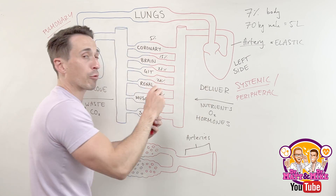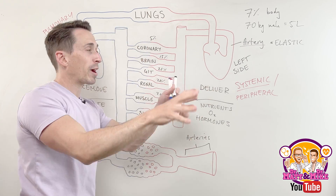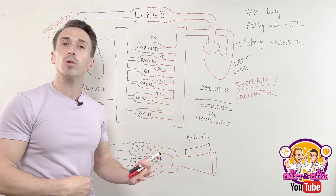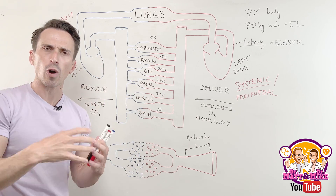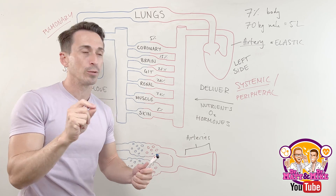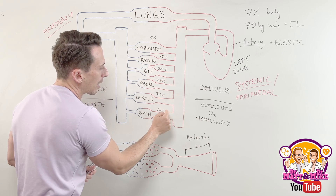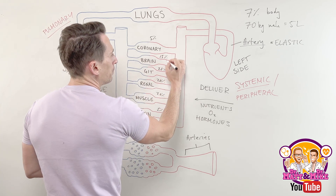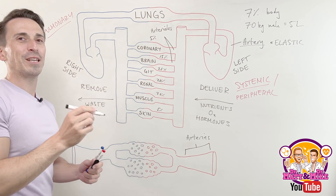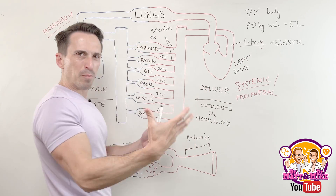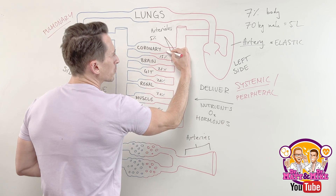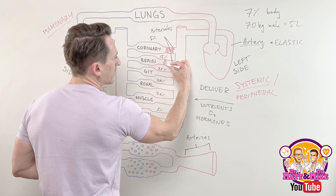The arteries start to branch like a tree, and the terminal aspect of the arteries — so right at the very end, after all these branches — the smallest arteries you'll find are called arterioles. What do we know about arterioles? Well, they're not really elastic like the big arteries. They have lots of smooth muscle wrapped around them.